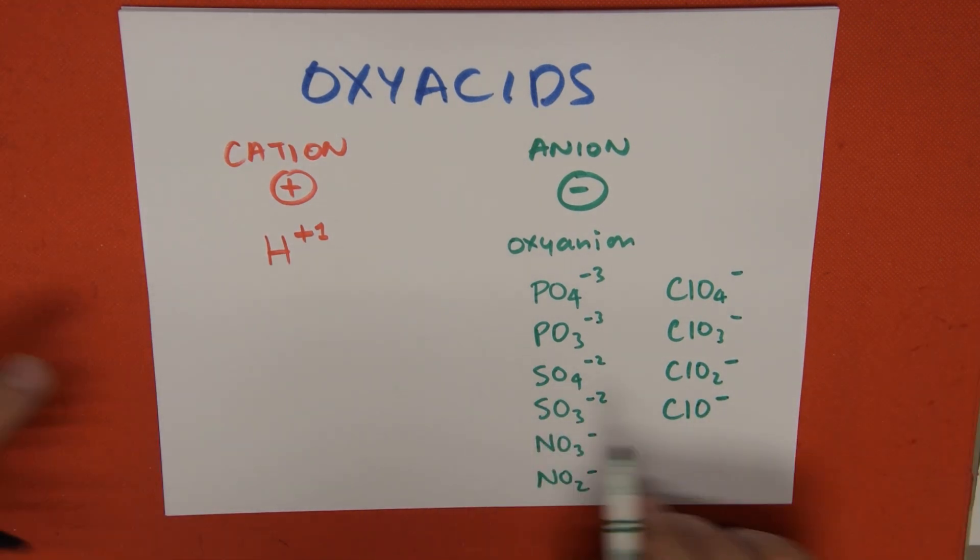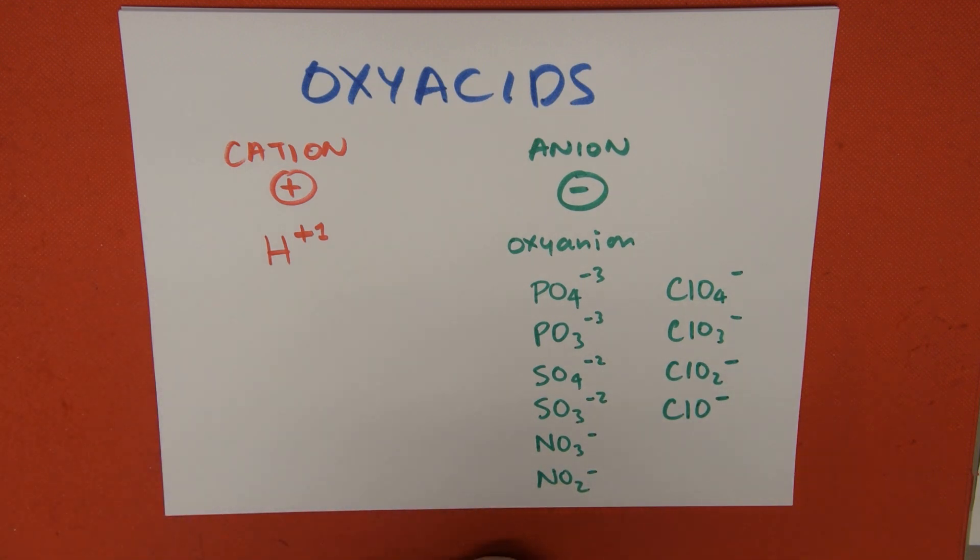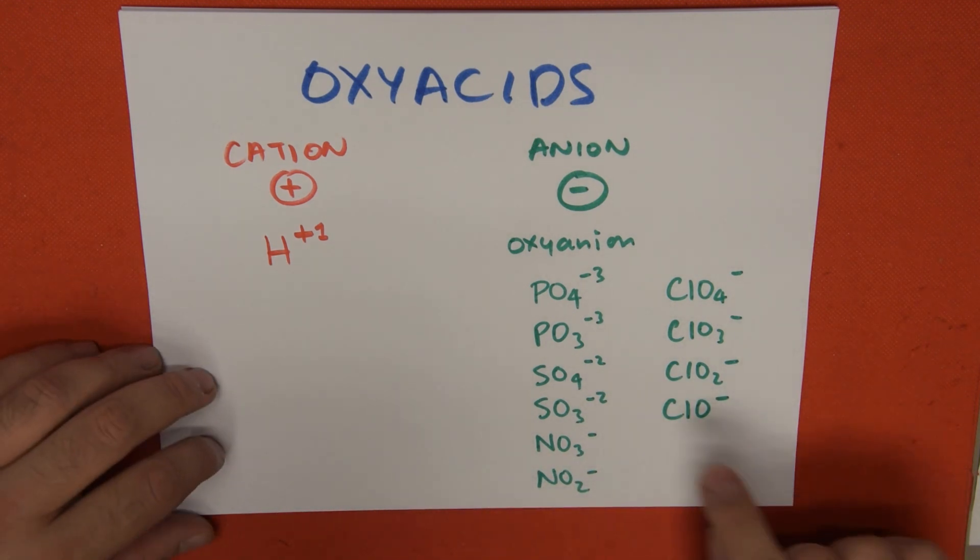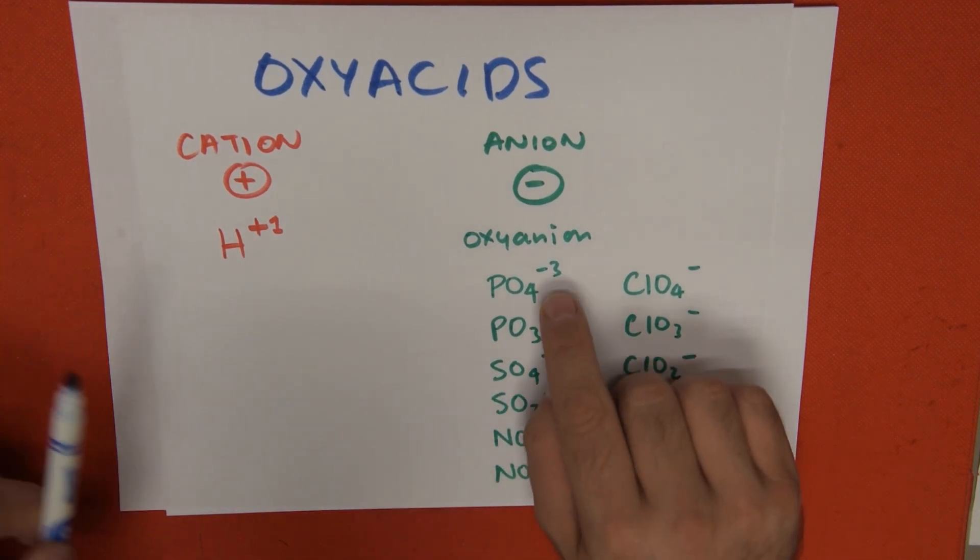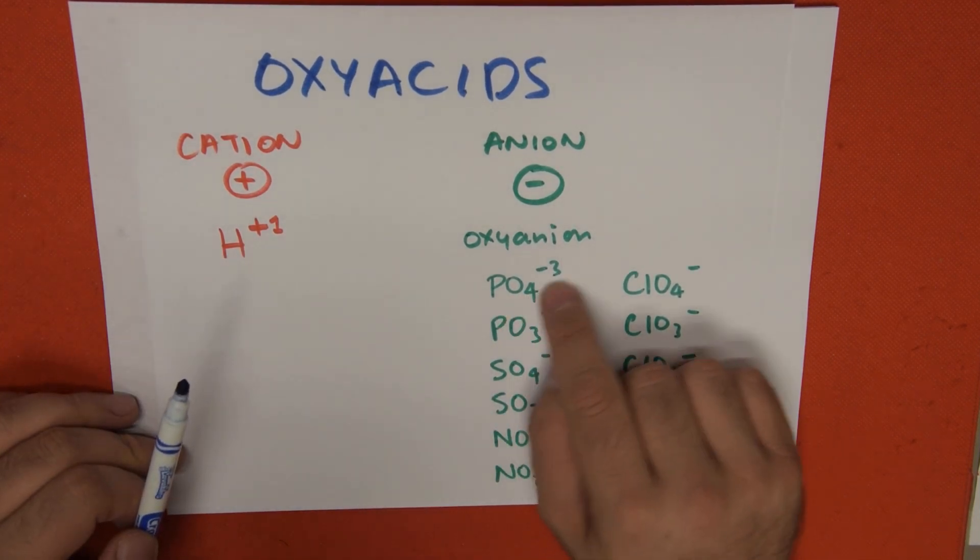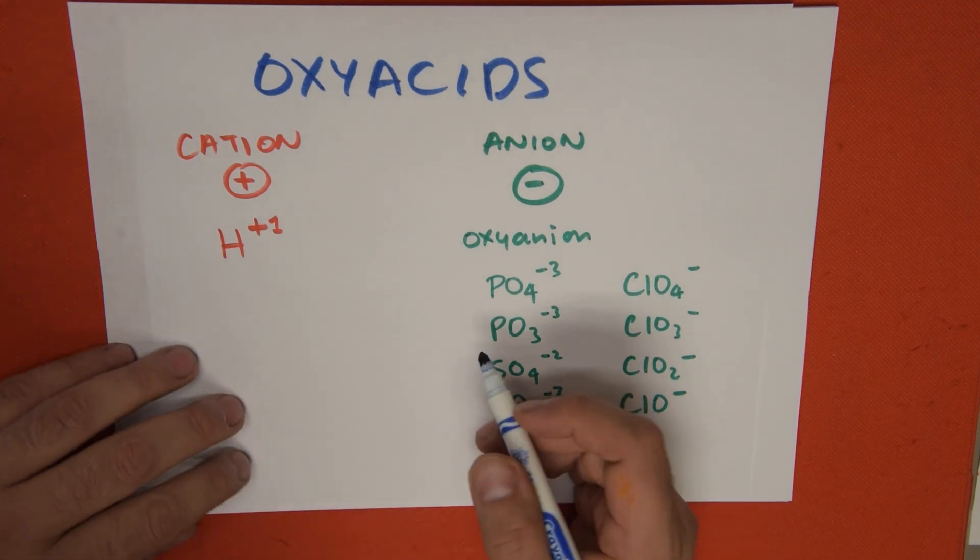Whenever we combine these two together, we're going to get an oxyacid. If I take the same sheet and do my crisscross, the only thing we have to do is take the valence of the oxyanion and give it to the hydrogen atom. That's really the end of the story.